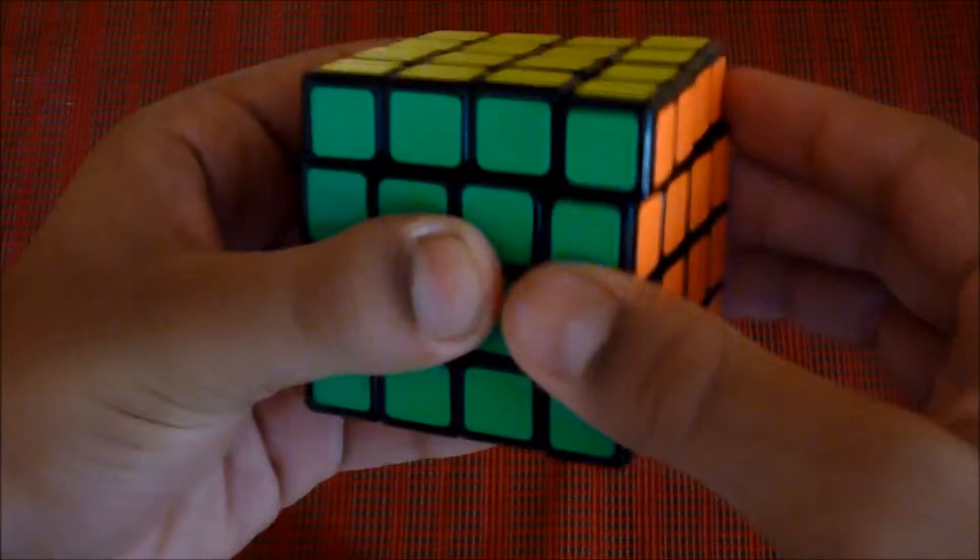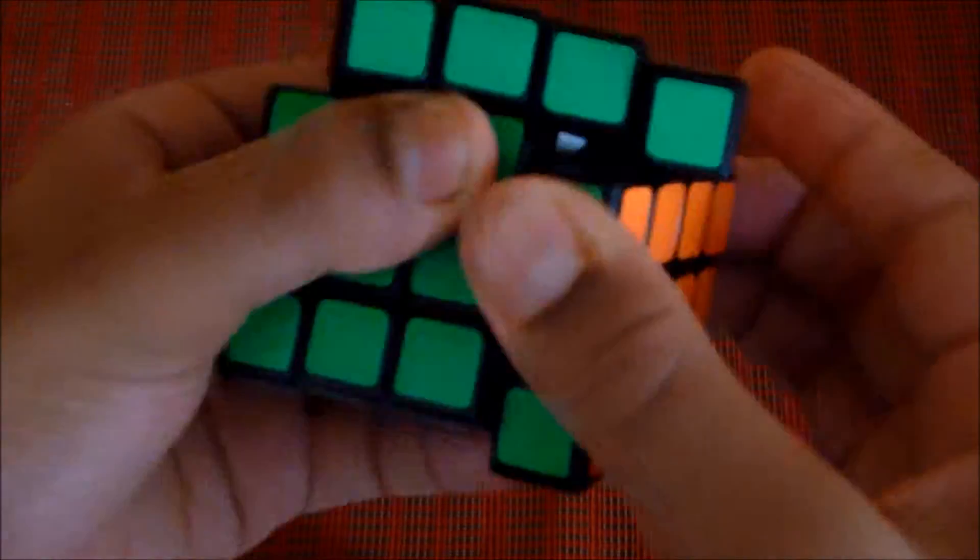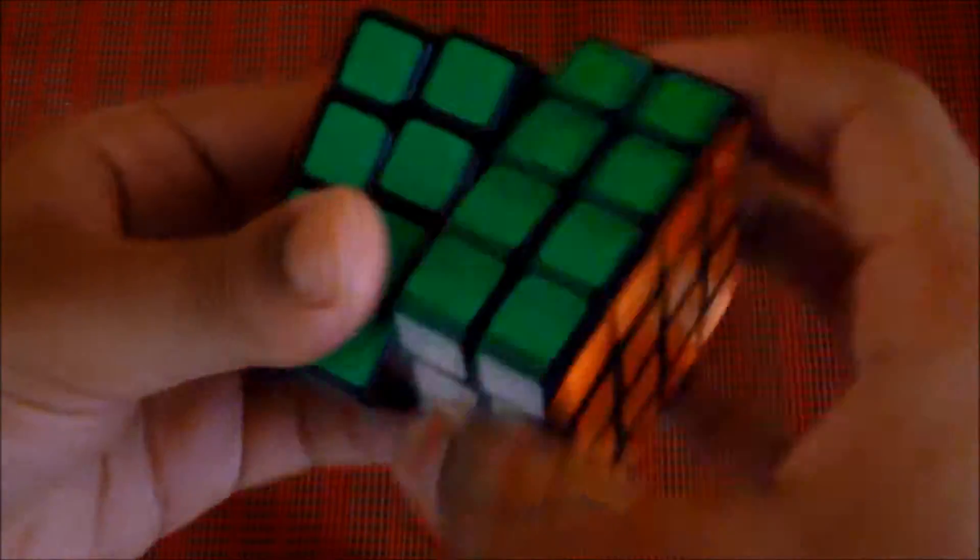So the Aosu turns very fast and it has pretty good corner cutting. Even the inner layers are really fast.